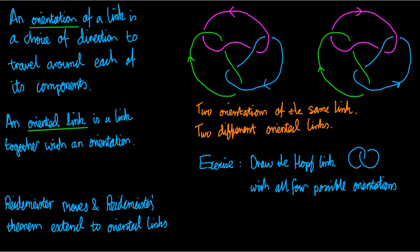The theory of what it means for two links to be equivalent, and the theory of Reidemeister moves and Reidemeister's theorem, all still work for oriented links. Reidemeister's moves and Reidemeister's theorem extend to oriented links.